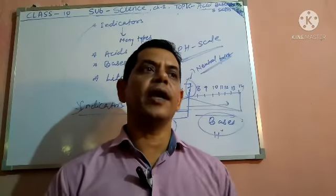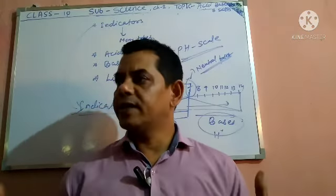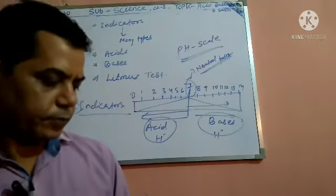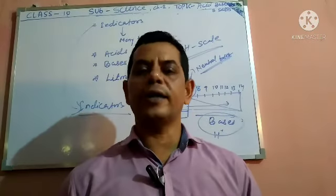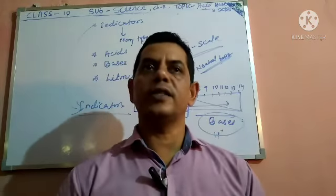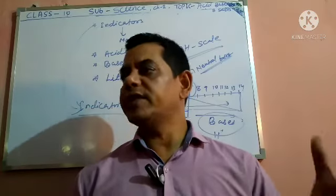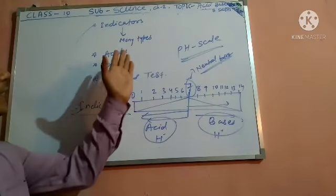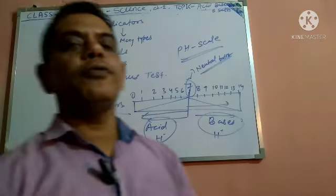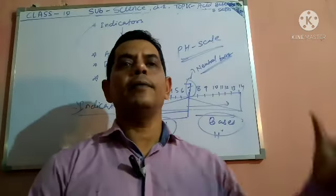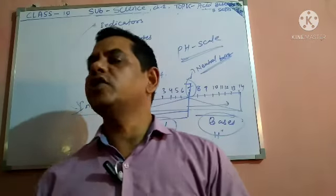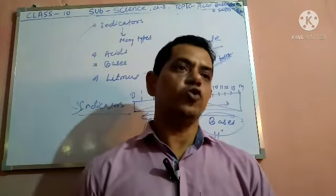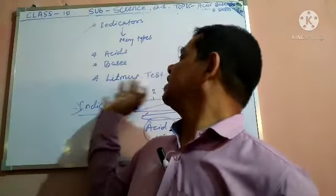Some natural substances occur like turmeric, red cabbage, litmus, etc. — these are said to be naturally occurring indicators. In some tests, where a natural test is not available, that test like pH is used.